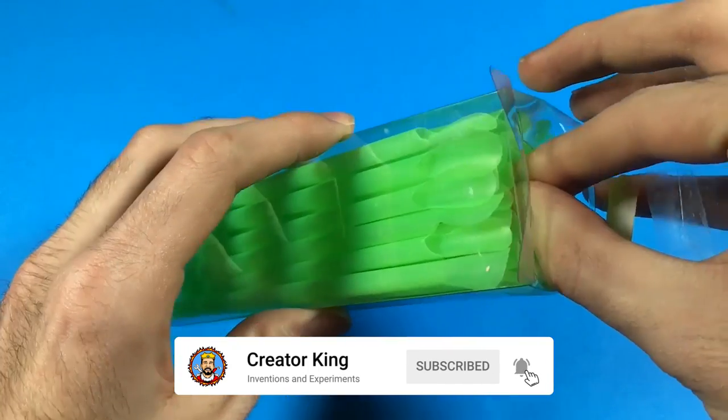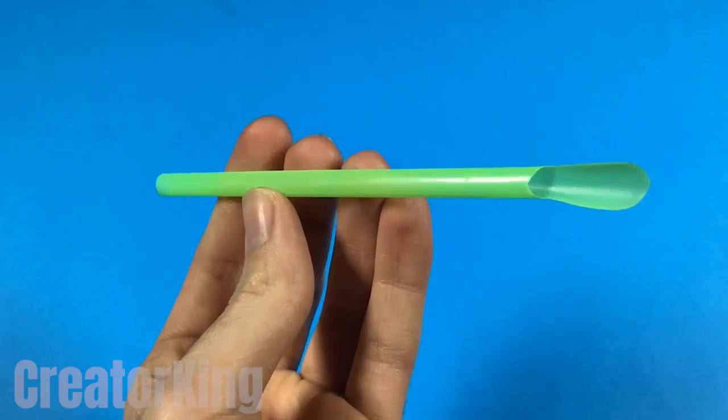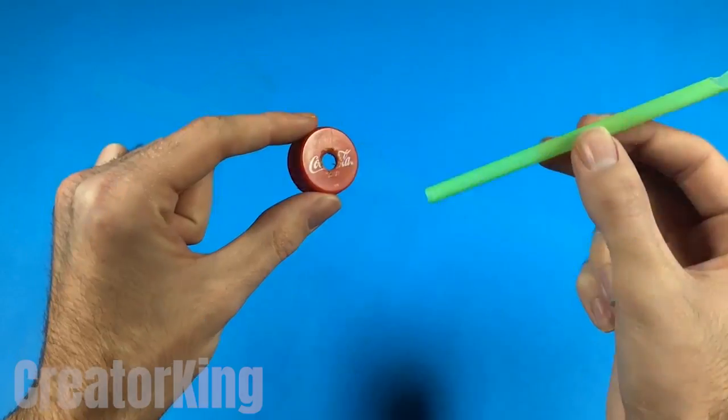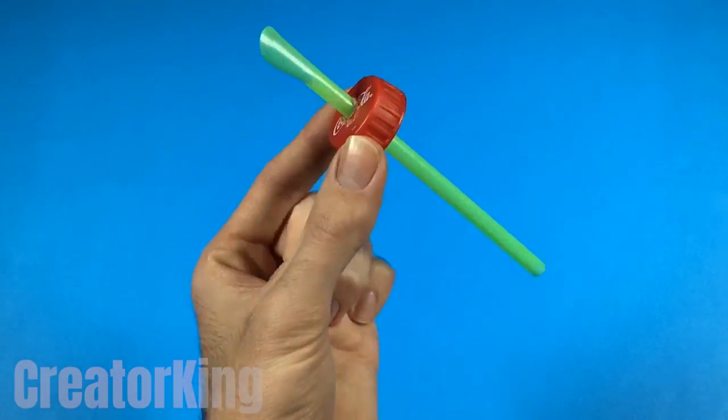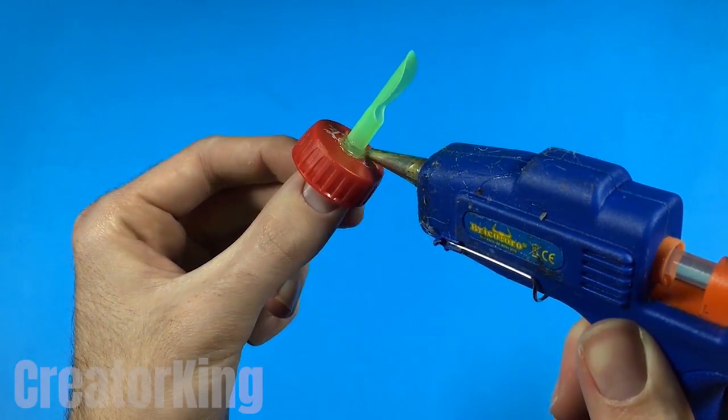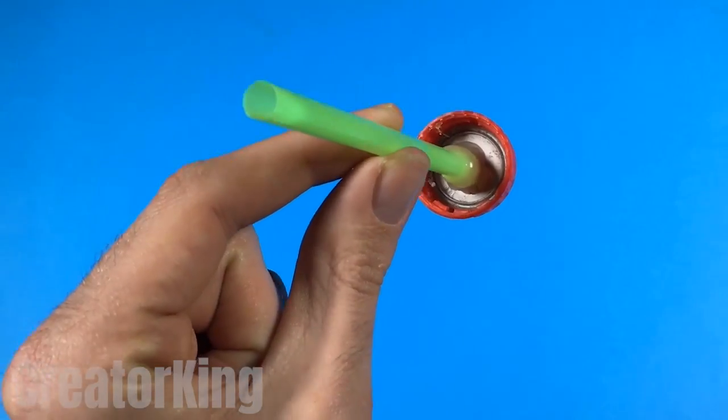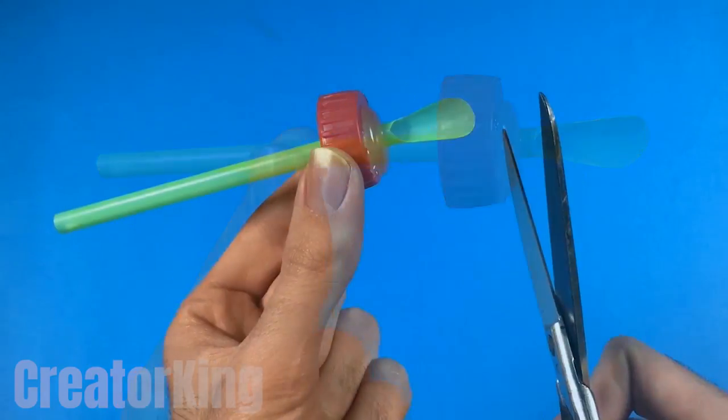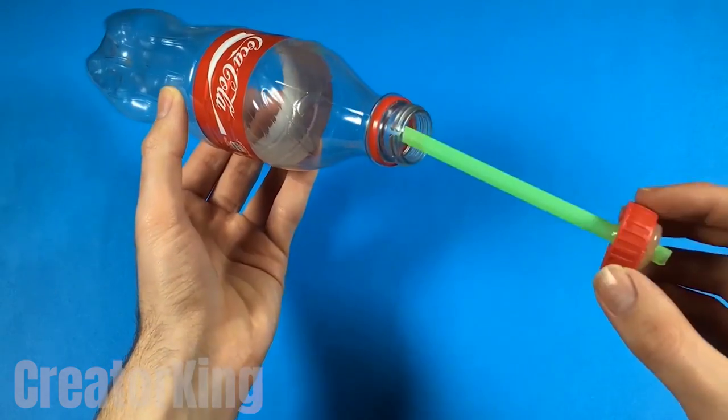Let's take a closer look. Insert the straw through the hole in the lid, leaving the spoon side facing out. Secure both the top and the bottom with plenty of hot glue. Cut off the spoon part because it will not be necessary, and screw the cap back on the Coke bottle.